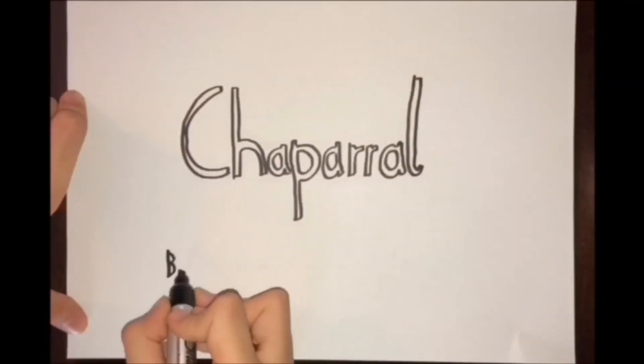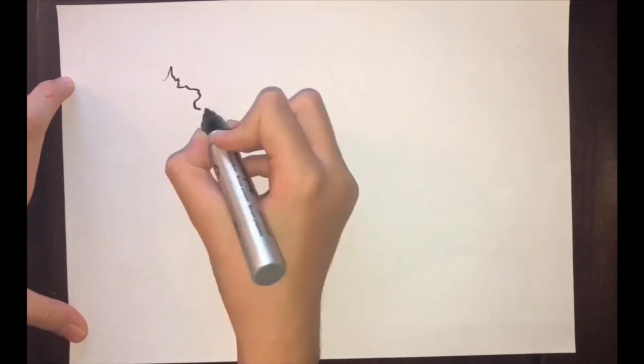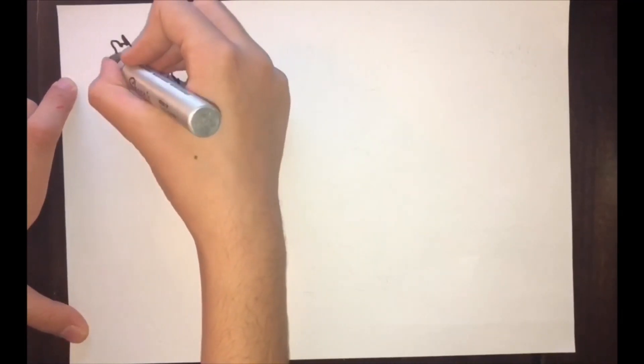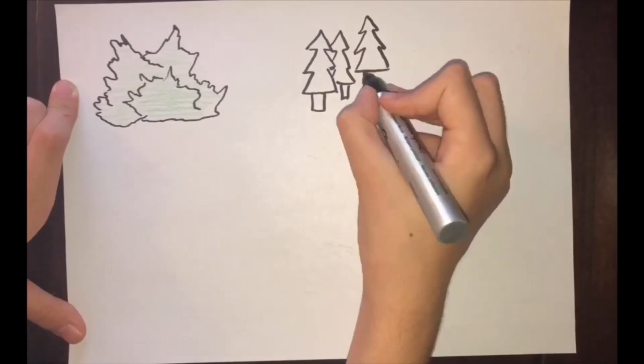Chaparral is the Spanish word for a place of evergreen scrub oaks. It is a region of dense spiny bushes. Being the smallest biome, it grows between forest and grassland.